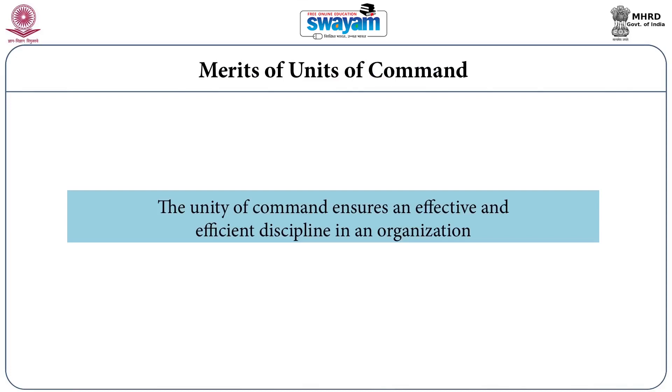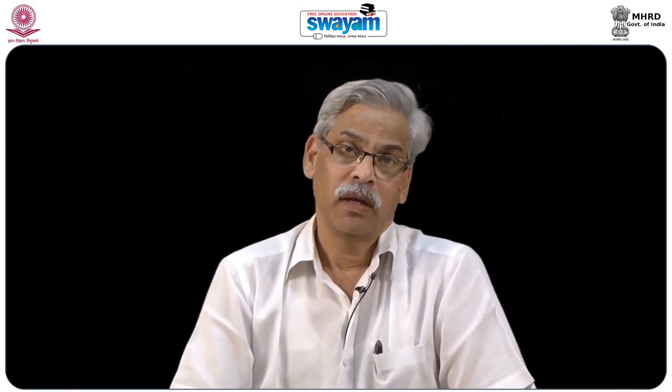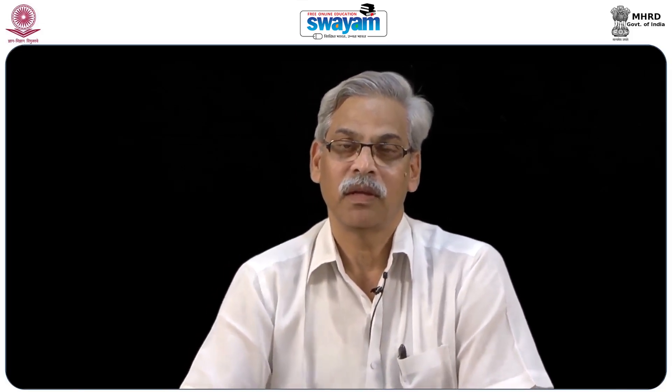Unity of command helps managers take quick decisions relating to their respective departments. It ensures efficiency, economy, and effectiveness — the slogans of the New Public Management movement — which were originally unstated outcomes behind this principle. It also ensures effective and efficient discipline. For example, Section A cannot report to Section C, bypassing its immediate boss; the principle clearly stipulates the immediate boss principle, and this clear division also ensures discipline.